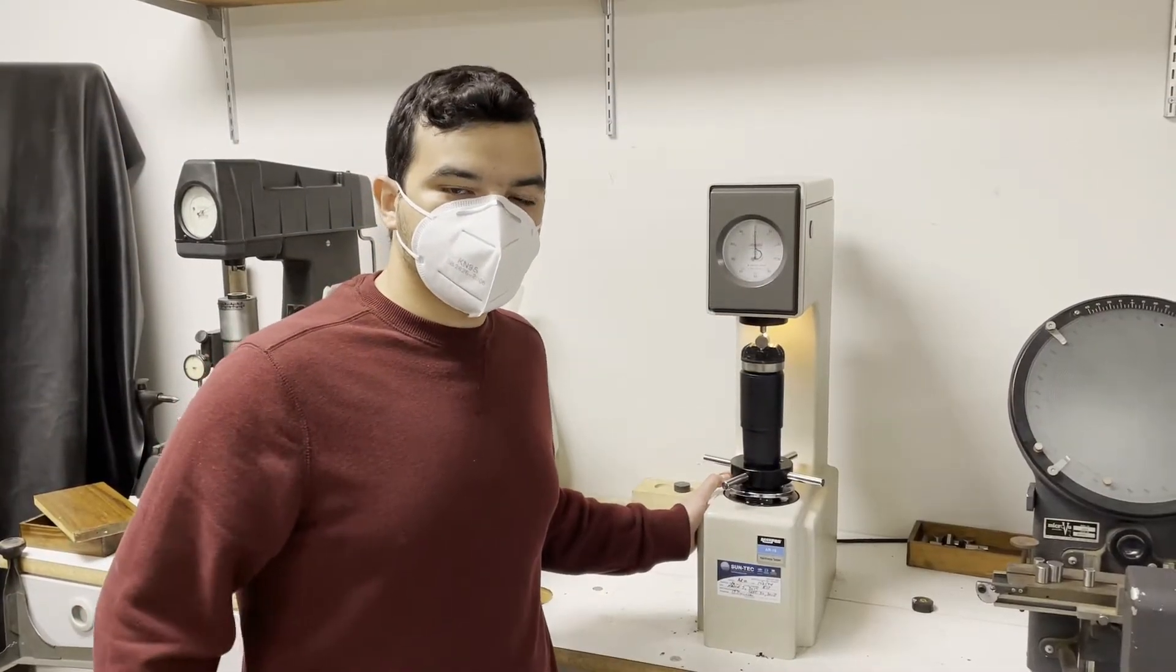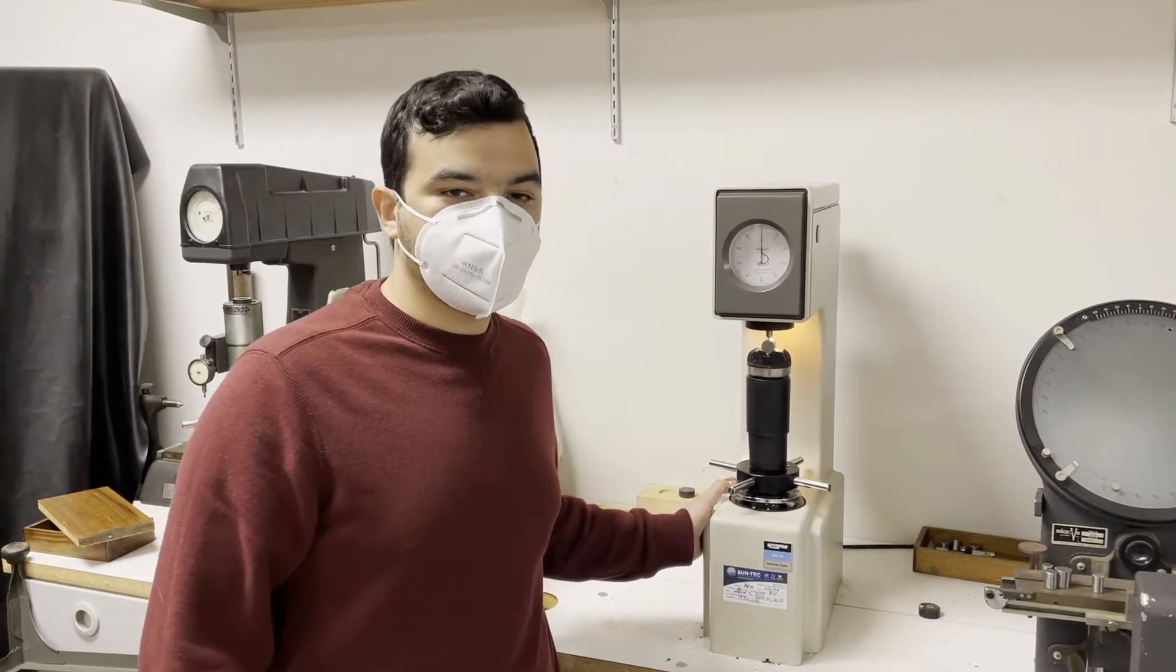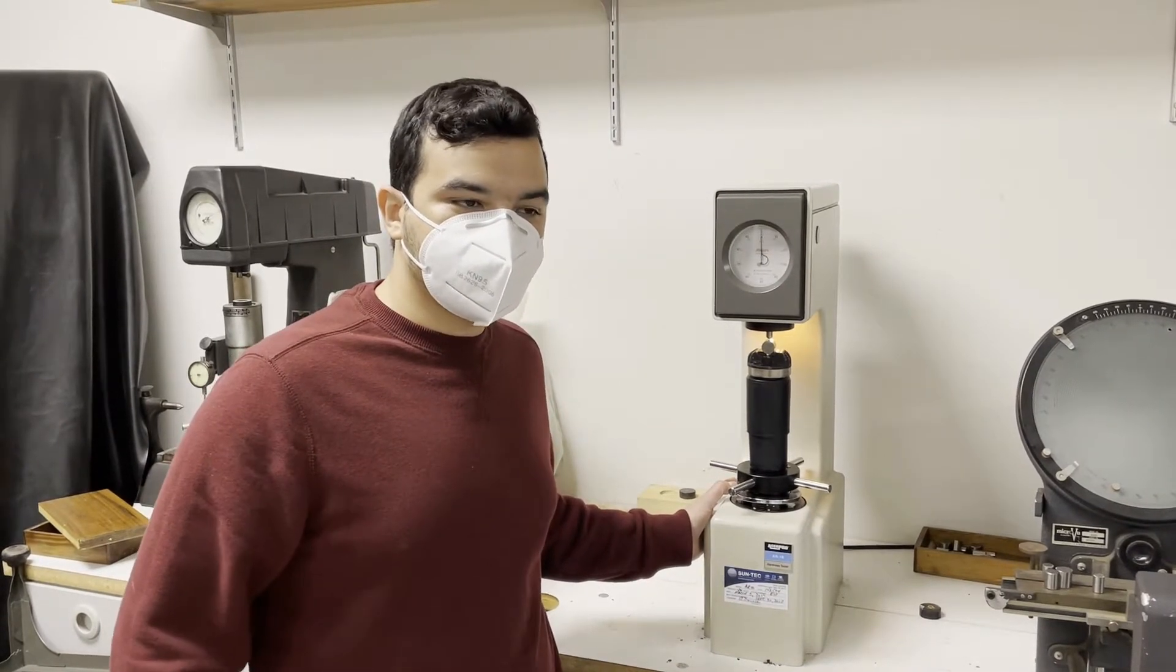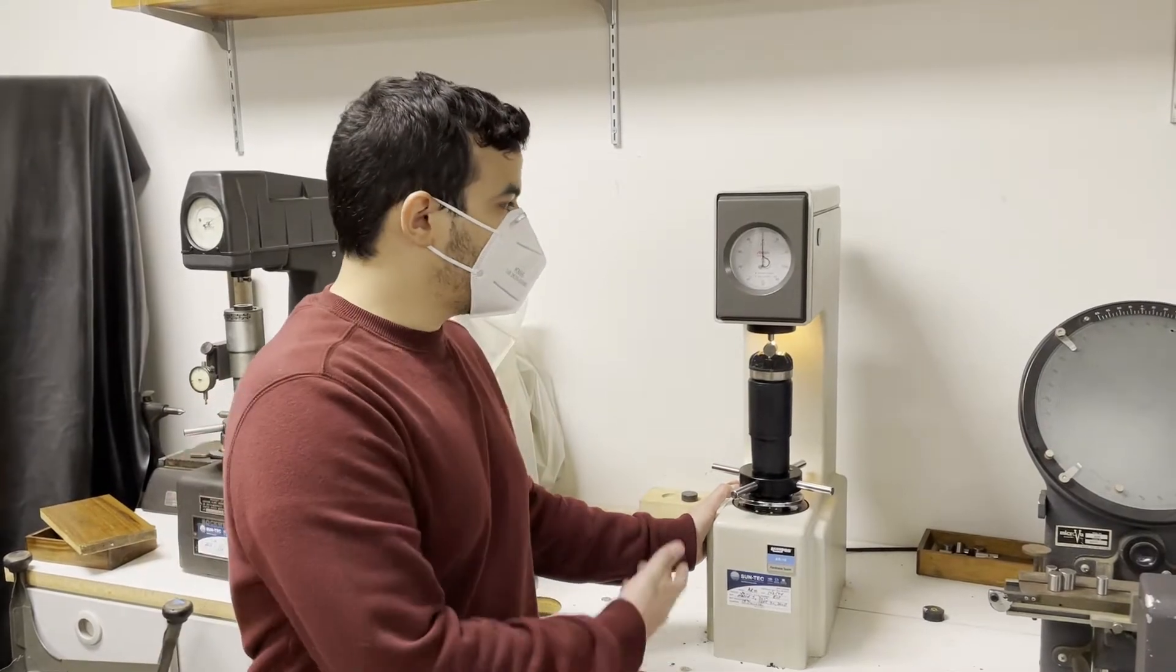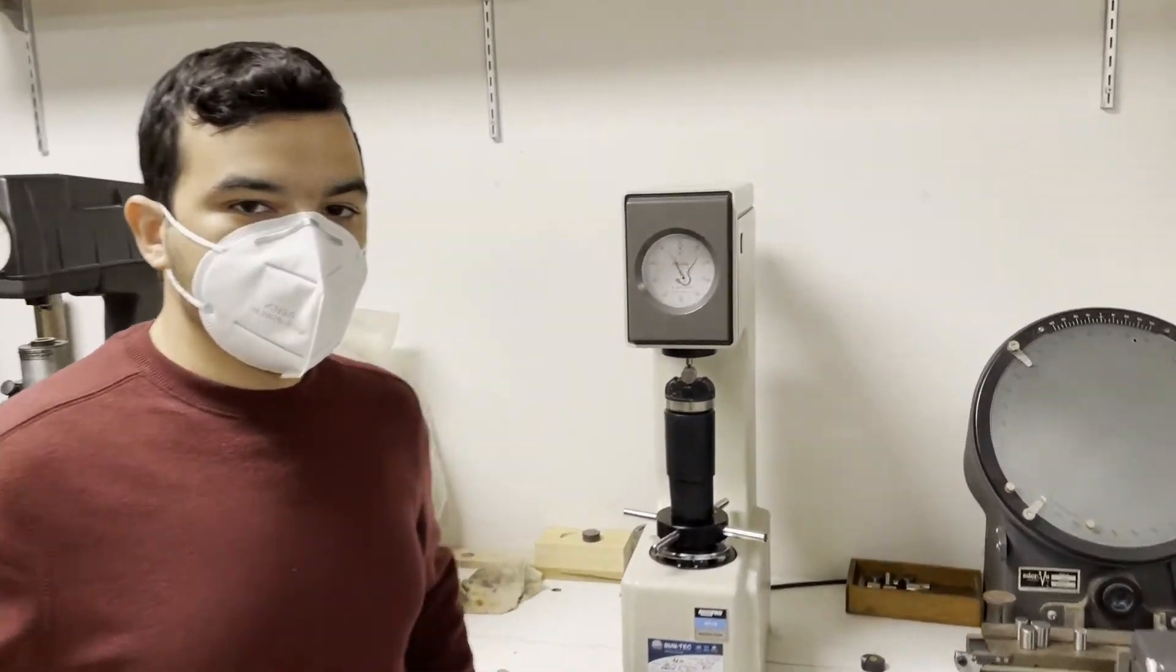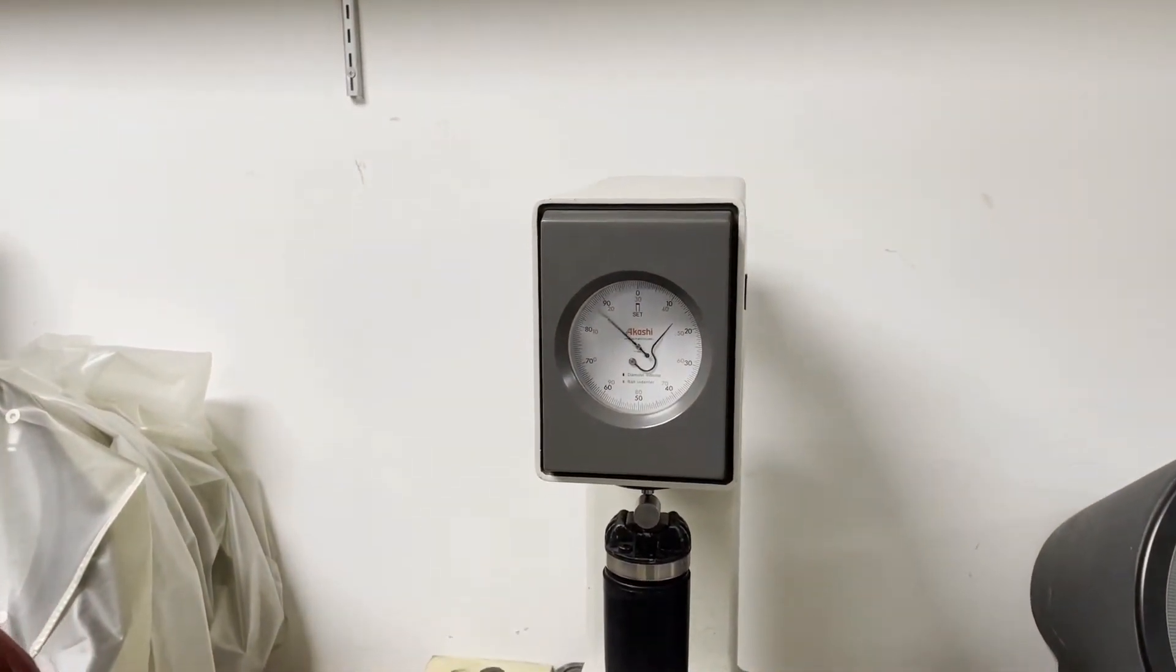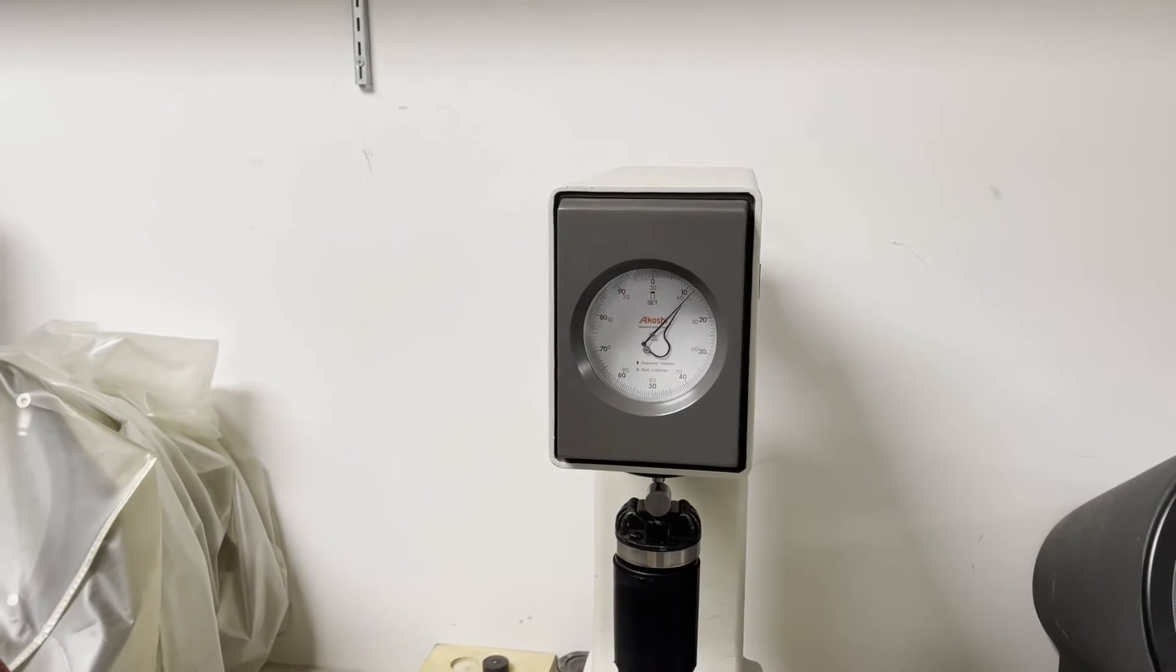Another part of our experiments that we prepare here in the material science lab is a hardness test. We have three different types of hardness testers: the Rockwell tester as we have here, the Vickers, and a micro hardness tester. As you can see, it's working neatly.